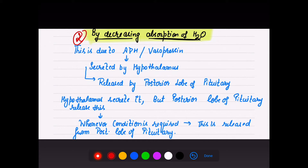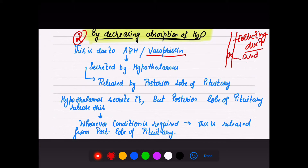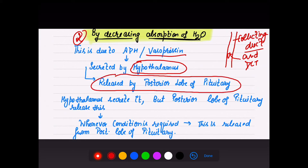To decrease absorption of water: in the collecting duct, absorption is under the control of ADH (also known as vasopressin). ADH regulates absorption in the collecting duct as well as the DCT. ADH is secreted by the hypothalamus, but it is stored and released from the posterior lobe of the pituitary gland when required.